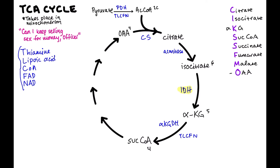Next, we go from succinyl-CoA to succinate. Not a lot of important things happen here other than we lose a CoA, and when we lose a CoA, we often generate either ATP or GTP. Then we go from succinate to fumarate — you may recognize fumarate from the urea cycle lecture. The enzyme from succinyl-CoA to succinate is succinate thiokinase, and from succinate to fumarate is succinate dehydrogenase.